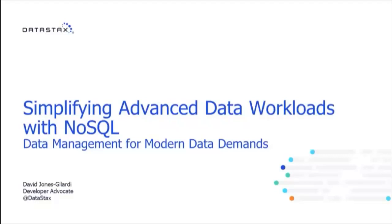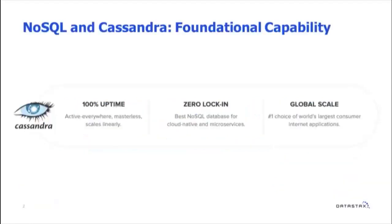What I'm really going to get into is talking about how our advanced data workloads have gained a lot in complexity these days, and how you can simplify them with a NoSQL platform. The NoSQL platform I'm referring to is Apache Cassandra. For those of you who are not familiar with Apache Cassandra, there are some really main items that come up: 100% uptime, zero lock-in, and global scale.